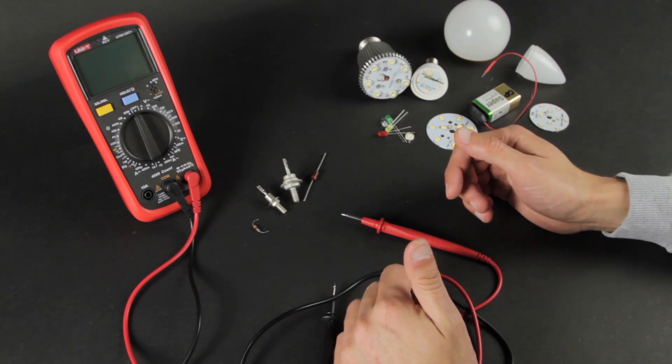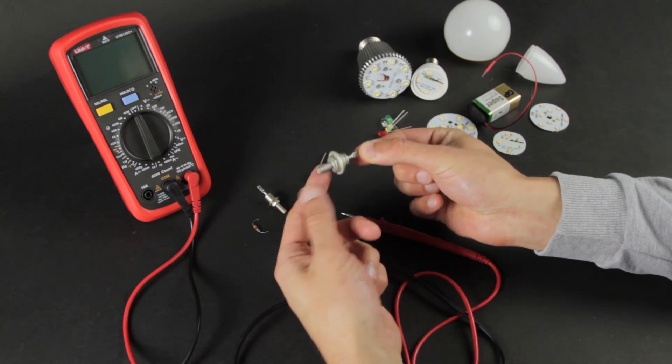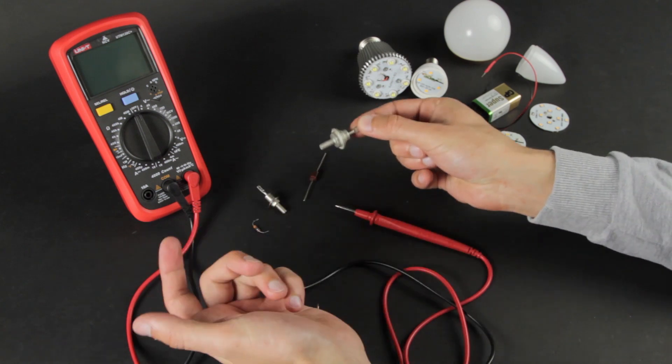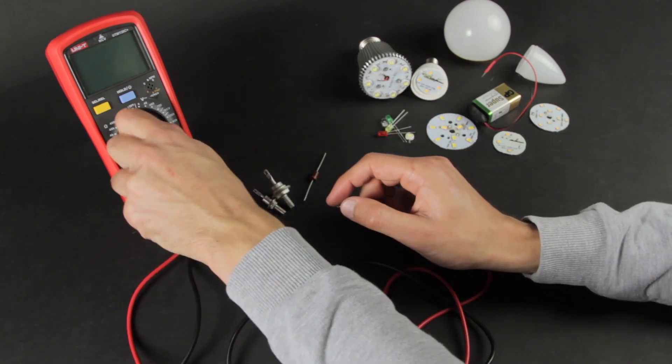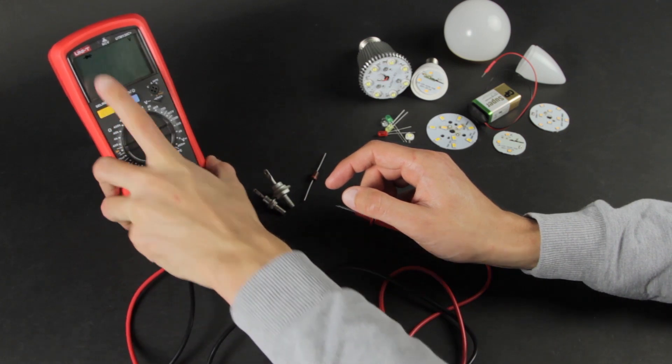A diode is a two-terminal electronic component that conducts current in one direction. One output is the cathode and the other one is the anode. You may check the diode using a multimeter. Switch the meter to diode test mode. It's marked with this icon.